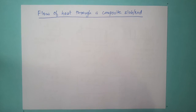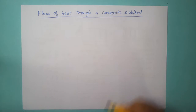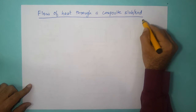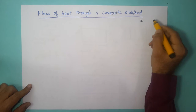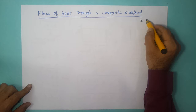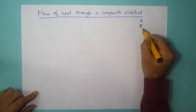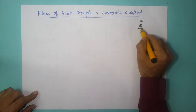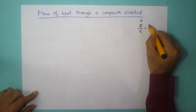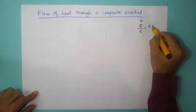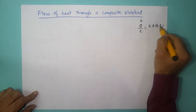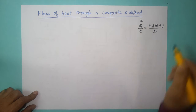I gave an introduction to heat conduction and we had a discussion on the coefficient of thermal conductivity K. We derived this equation: Q by T is equal to K A (theta 1 minus theta 2) upon L.